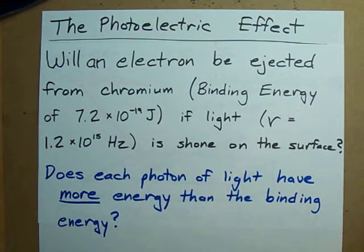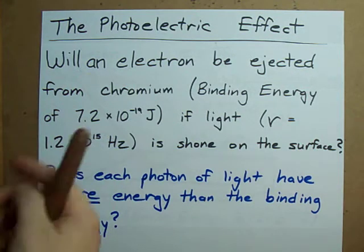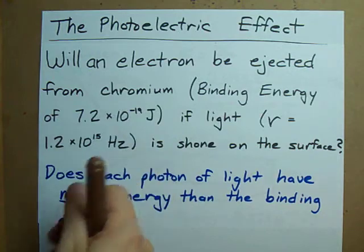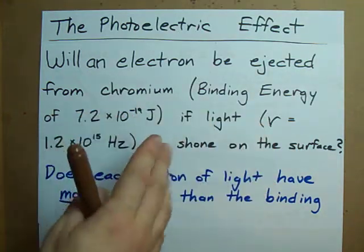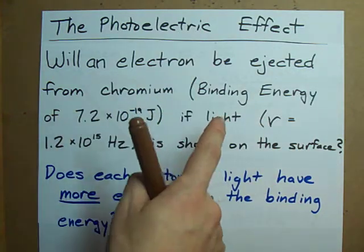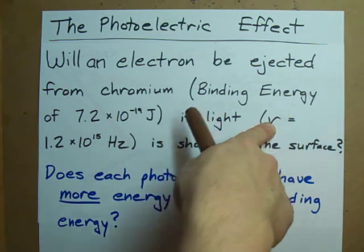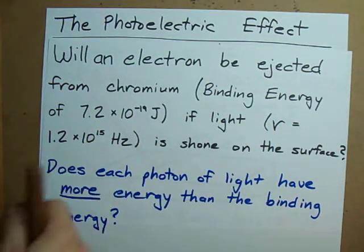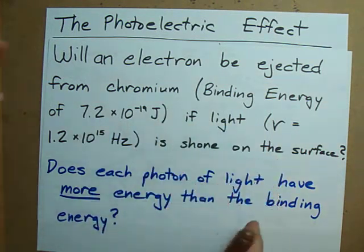A common question posed to students studying the photoelectric effect is will an electron be ejected from a metal, in this case chromium, and they'll give you the binding energy, if light with a certain frequency, in this case 1.2 times 10 to the 15 Hertz, is shone on the surface.